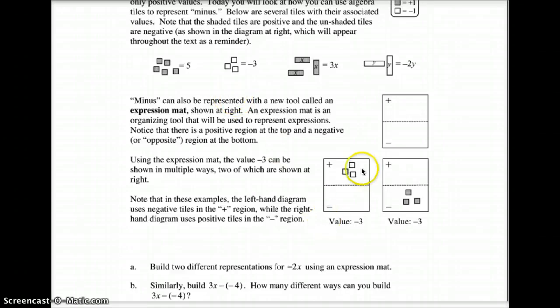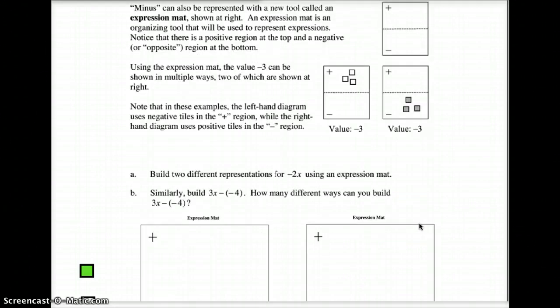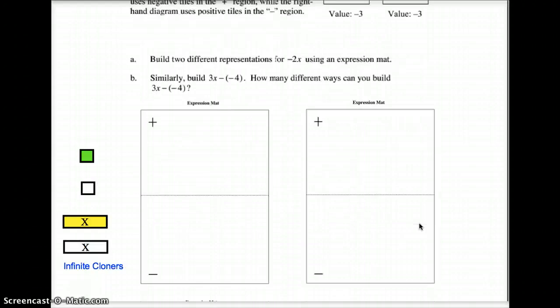So up here, this is equal to negative three. This is equal to negative three. How do we use the expression mat to make both of those equal to negative three? Well, down here, where it's like adding three negatives, so which is plus negative three, down here it's like subtracting positive three, or minus positive three. Okay? So let's see how we can use this to build a couple for ourselves.